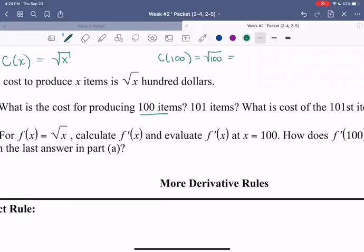So that would be square root of 100 is just 10. So recall this is in hundreds of dollars. So to produce 100 items, we would have 10 times 100, so we'll have to include two more zeros. So a thousand total dollars.